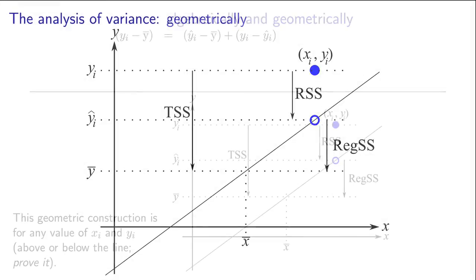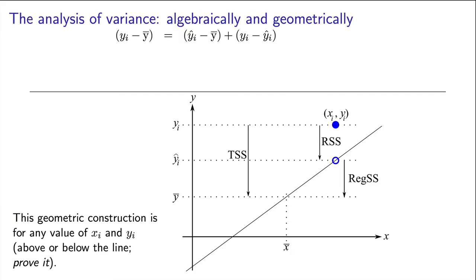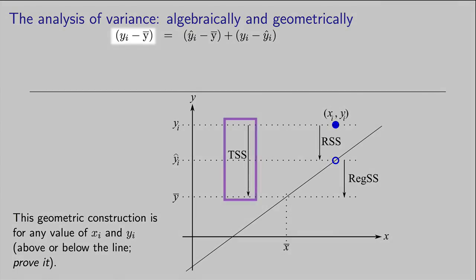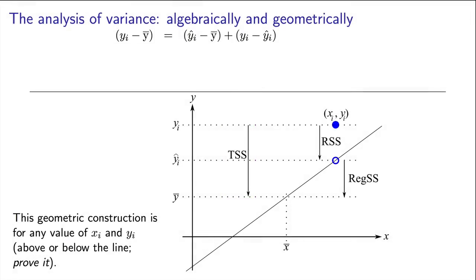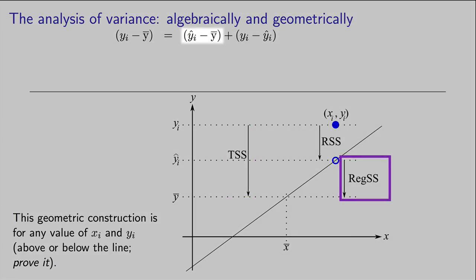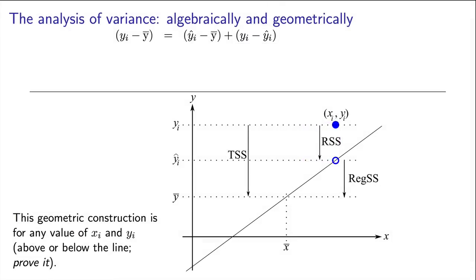Now let's go look at this algebraically. That total deviation, yi minus y-bar, can be written here on the left-hand side. And it's equal to the sum of two components. The first component is the prediction y-hat minus y-bar, and the second component is the distance from yi to y-hat. So we can see that geometrically and algebraically.